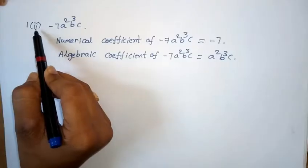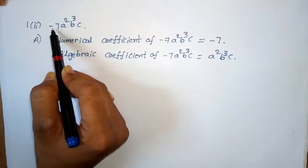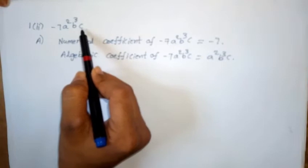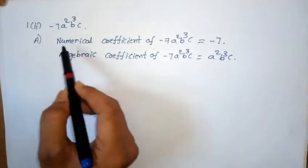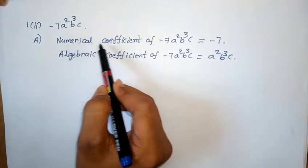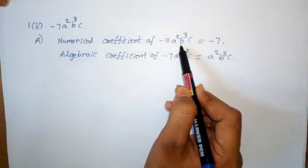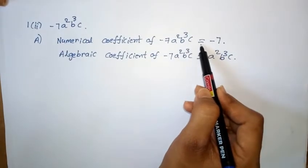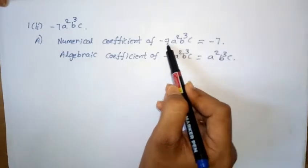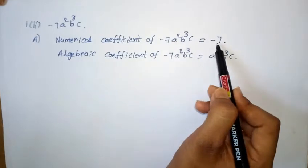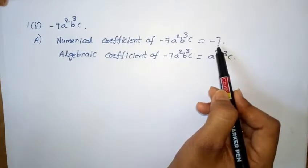Next, first Roman, second one: minus 7a²b³c. Numerical coefficient of minus 7a²b³c — numerical coefficient is number only, so minus 7 is the numerical coefficient.